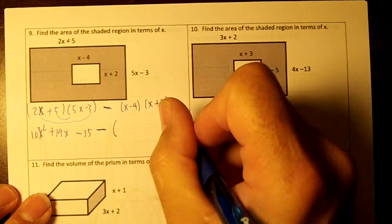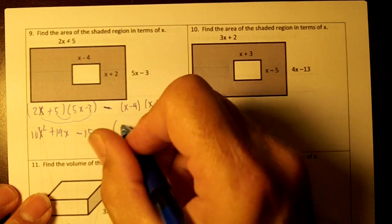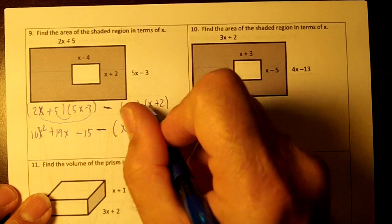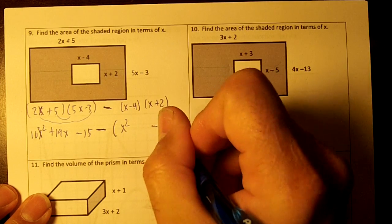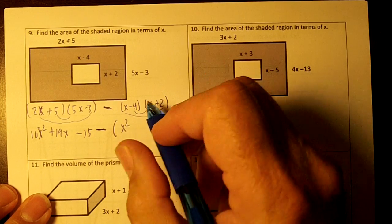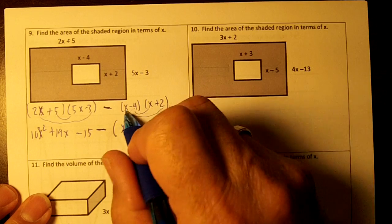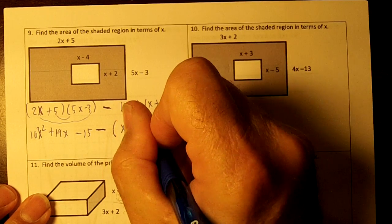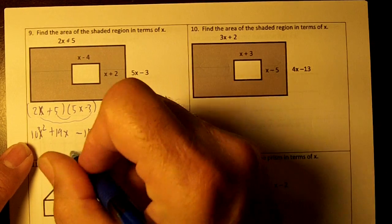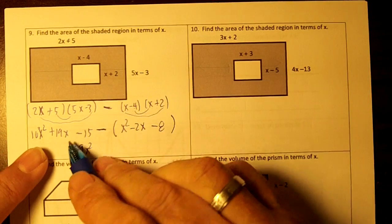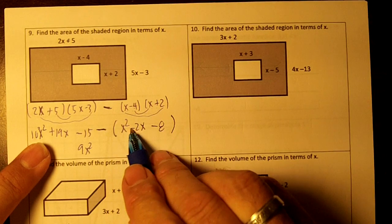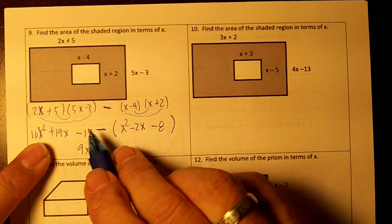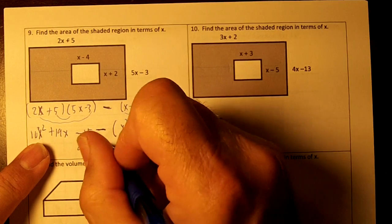Minus, and we're going to subtract this whole thing over here. x times x is x squared. Negative 4 times 2 is negative 8. Draw your arches. Negative 4x plus 2x is a negative 2x. So 10x squared minus 1x squared is 9x squared. 19x squared minus a negative 2x. Two negatives make a positive, so 19 plus 2 is 21x.